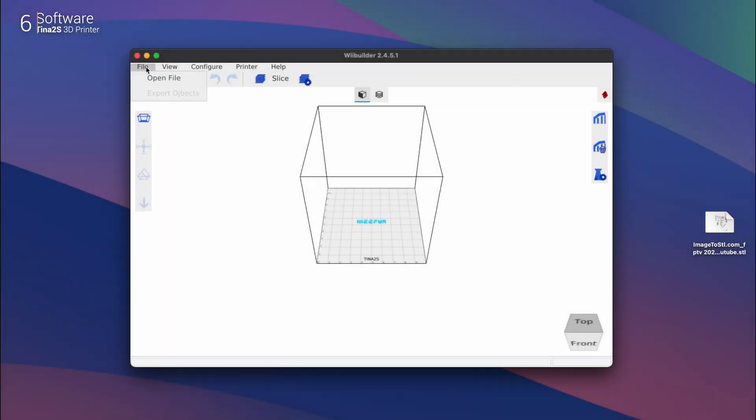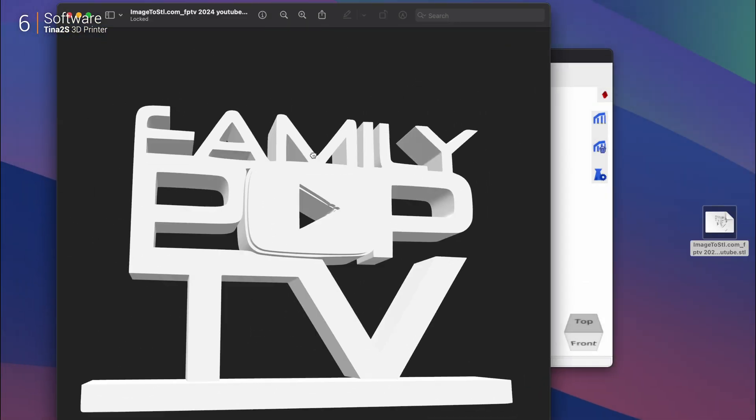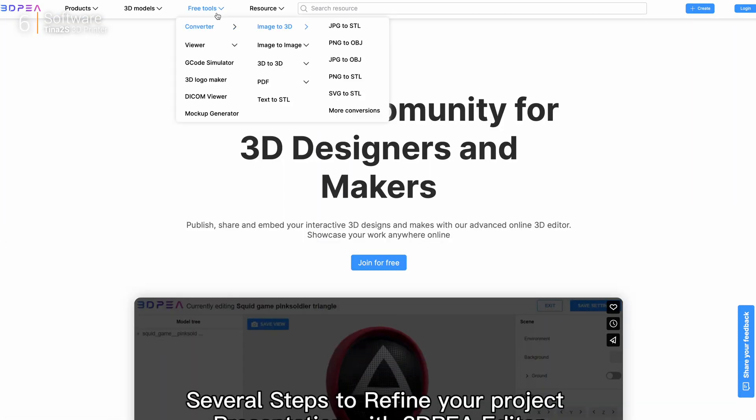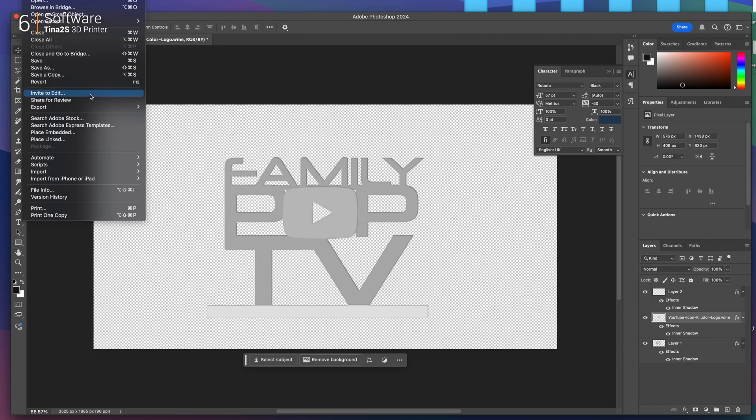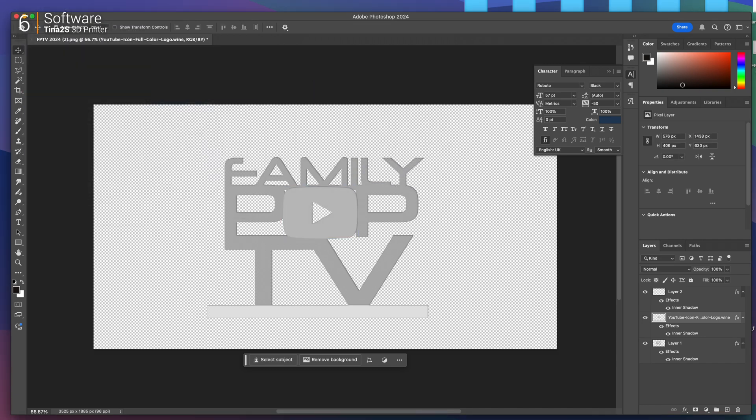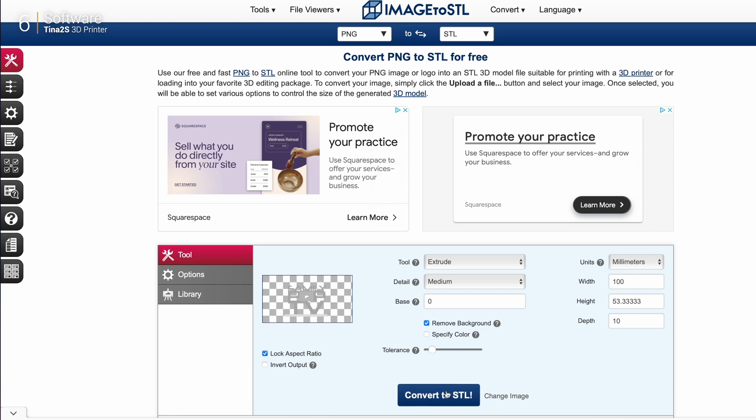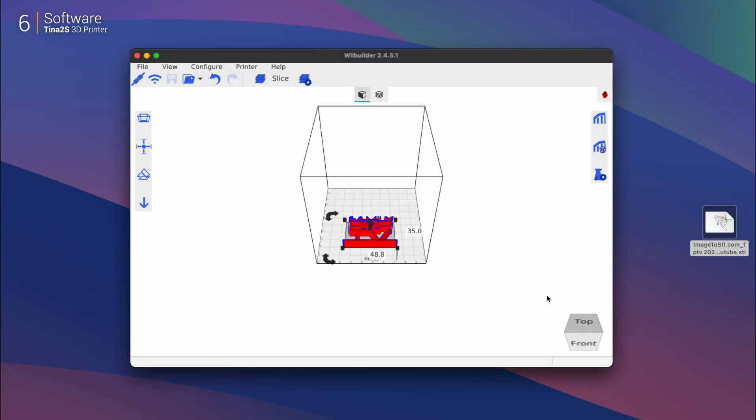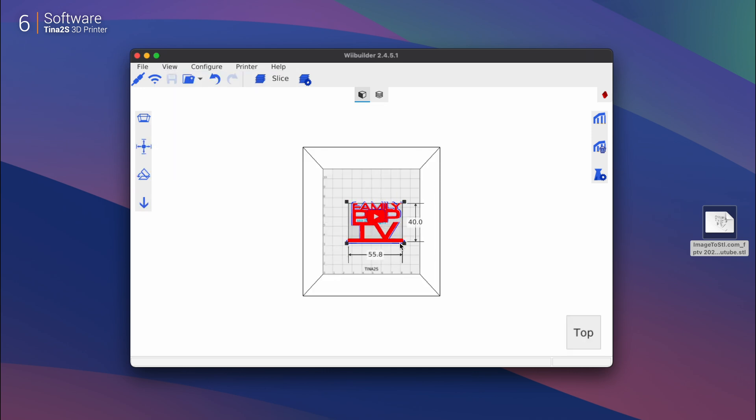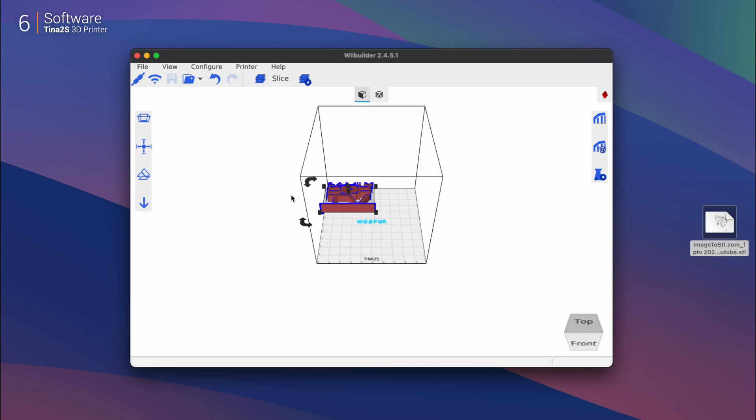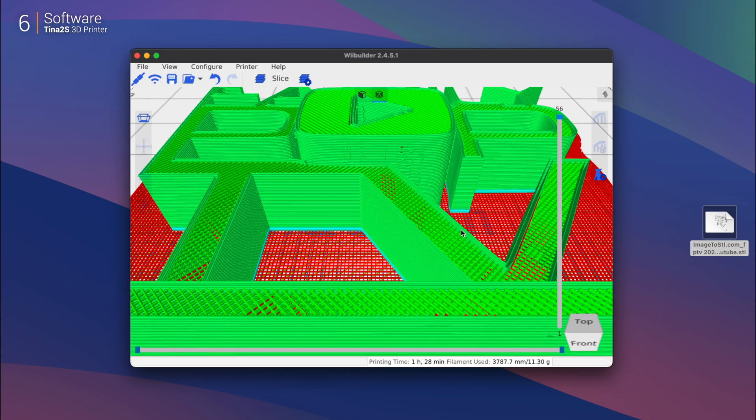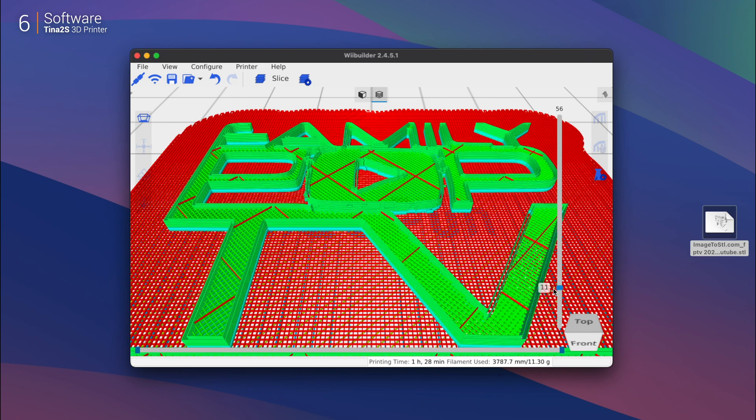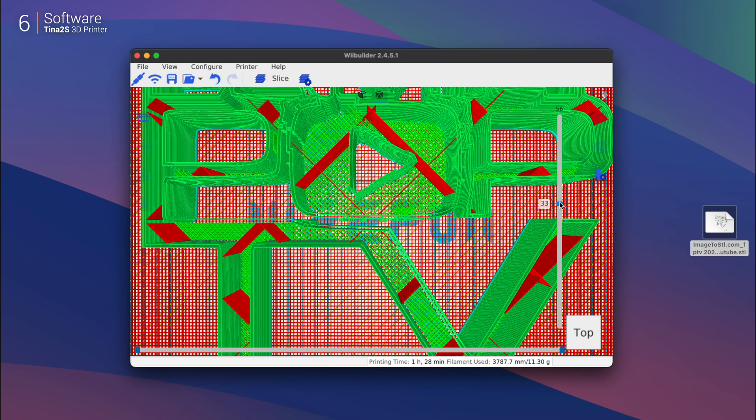Turning a simple idea into a 3D printed model is easier than you'd expect. Start by creating or downloading a 3D design and saving it as an STL file. If you're new to this, free online tools make converting 2D designs into 3D models a breeze. Webuilder, the included slicing software, is refreshingly straightforward. Load your STL file, adjust the scale if needed, and let the app handle the slicing for you. For beginners, the preloaded TINA 2s profile is a lifesaver—just stick to the recommended auto settings for material.